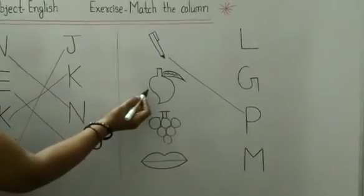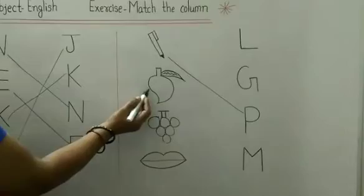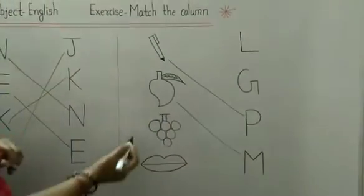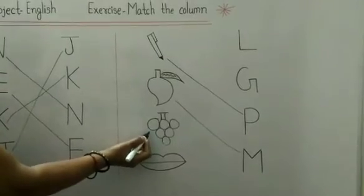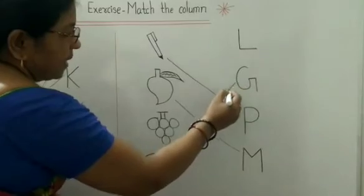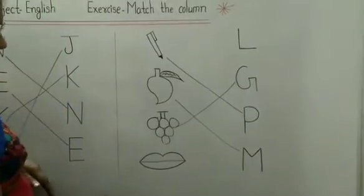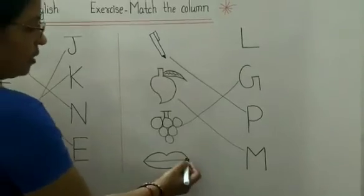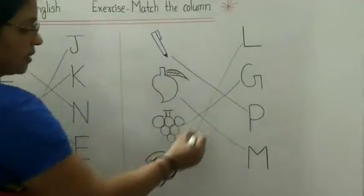And this picture is mango. Mango ko hama, M se match karengi. And this picture is grapes. Grapes ko hama, G se match karengi. And this picture is lips. Lips ko hama, M se match karengi.